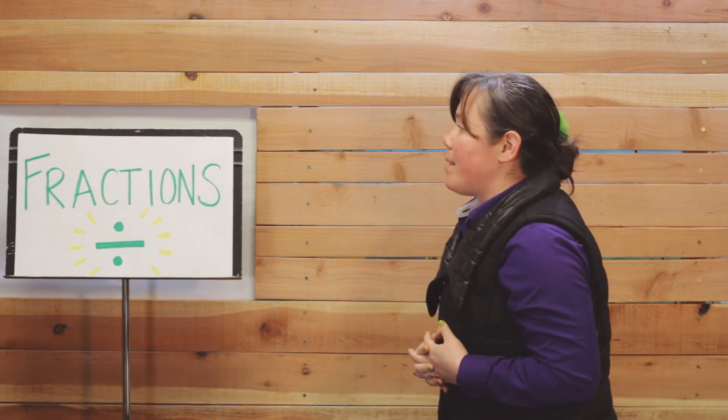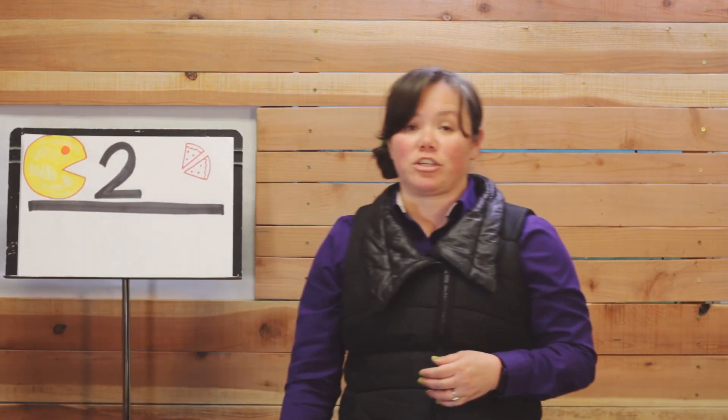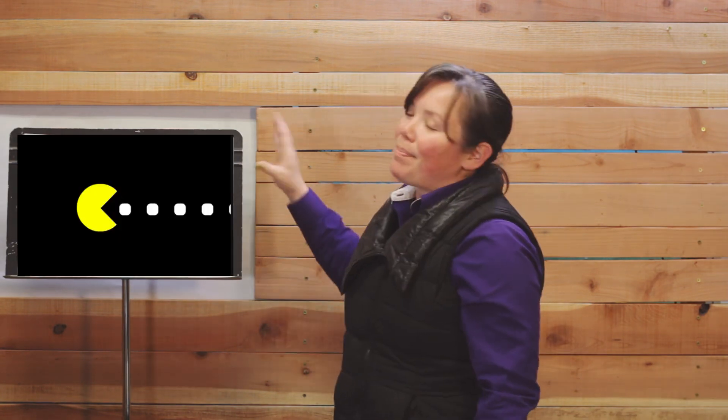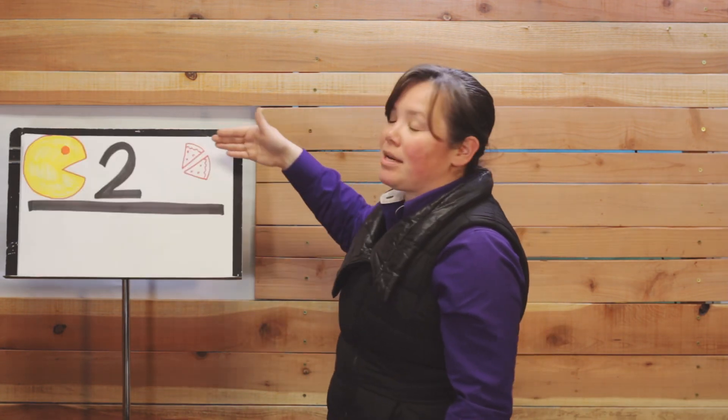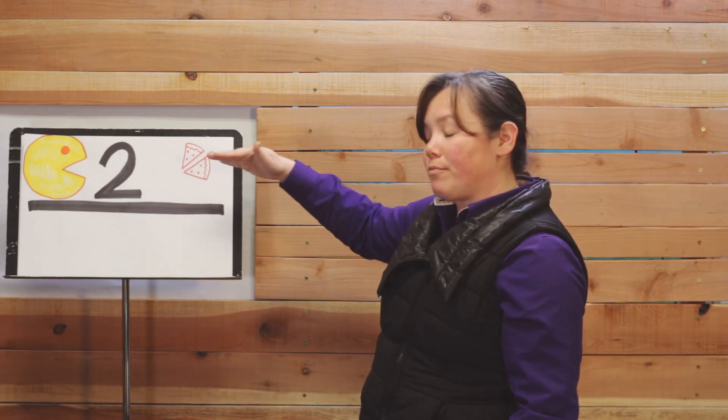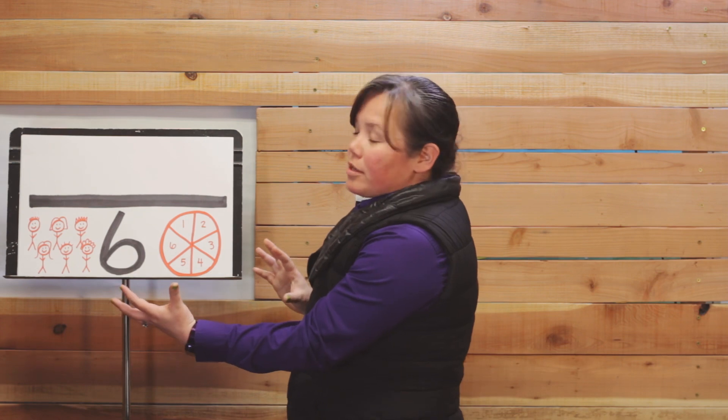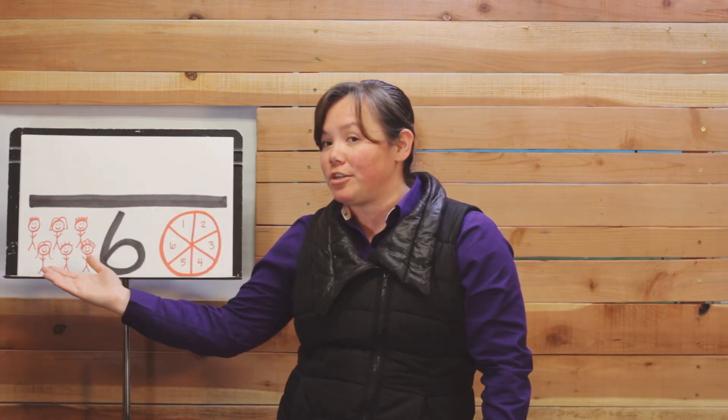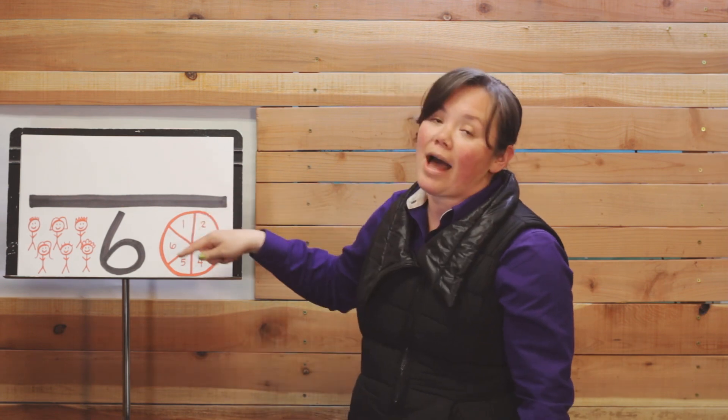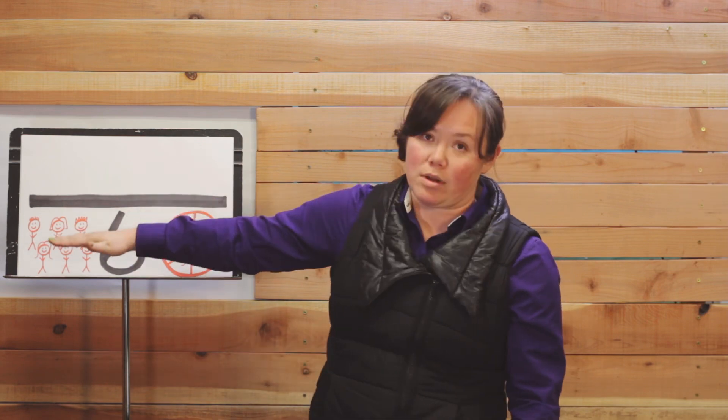So let's review a little bit about fractions. If you remember, the top number of a fraction is the part. This is the Pac-Man. This is how many pieces you get out of the pizza, so I get two slices or I get three slices. So the top number represents the part of the fraction. The bottom number represents the total, so this is the total people invited to your party or how many slices you have to divide your pizza up into. So this is the total number of pieces.